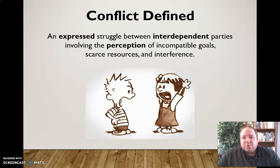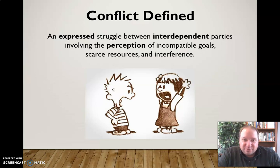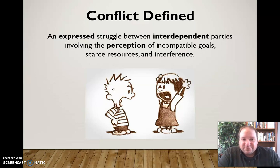Conflict is an expressed struggle between two interdependent parties involving the perception of incompatible goals, scarce resources, and interference. Let's break that down. First of all, conflict is an expressed struggle, meaning that it's something that's out there and known by all parties involved. If it's not expressed — if it's just something you're holding inside — then it's not conflict, it's just you being upset about something. Conflict involves a situation where both people are fully aware that there is a situation and that something is going on between the two of you.